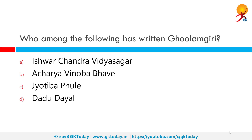In 1873, Jyotiba Phule wrote a book named Golamgiri, meaning slavery. He dedicated his book to all those Americans who had fought to free slaves, establishing a link between the conditions of lower castes in India and the black slaves in America. He even thanked Christian missionaries and British colonists for making the lower castes realize they are worthy of all human rights. So the correct answer is C: Jyotiba Phule.